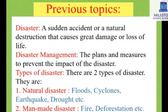In our previous class, we learned about disaster. What is disaster? A sudden accident or natural disturbance that causes great damage or loss of life is known as disaster. Then we learned about disaster management — the plans and measures to prevent the impact of the disaster is known as disaster management.